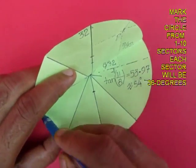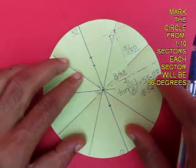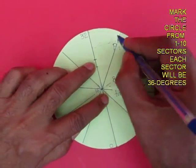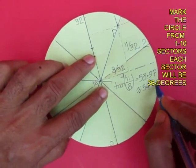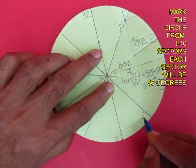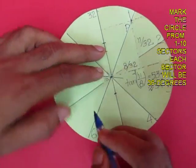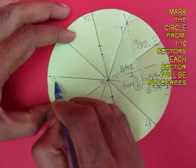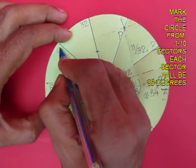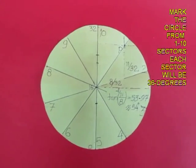Every time that you crease it, you mark the lines with the pen so that they are visible. So now you can see that this is divided into 10 parts and you name them 1, 2, 3, 4, 5, 6, 7, 8, 9 and 10. Each sector is 36 degrees.